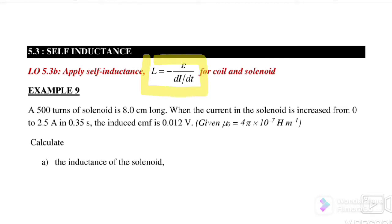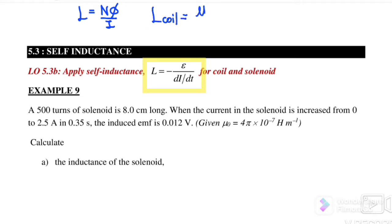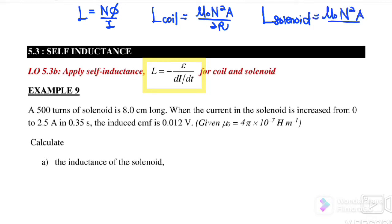The general equation for self-inductance is L equals negative EMF over ΔI/Δt. We can also use L equals NΦ over I, or for a coil: L equals μ₀N²A over 2r, or for a solenoid: L equals μ₀N²A over length. These are the three equations we can apply to find self-inductance.